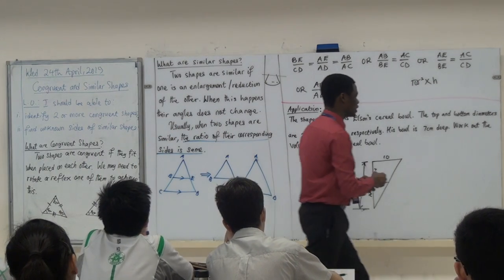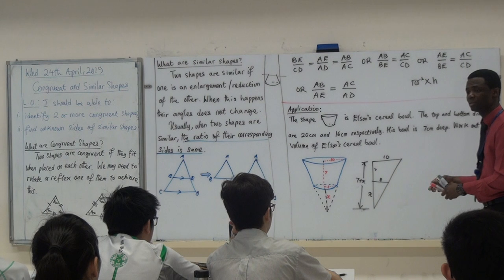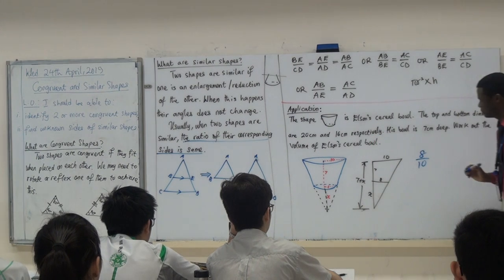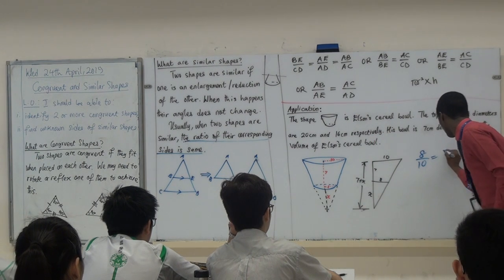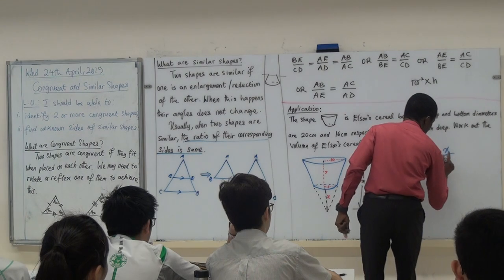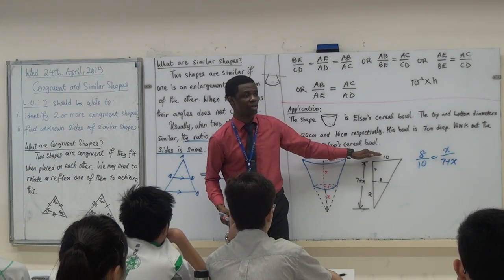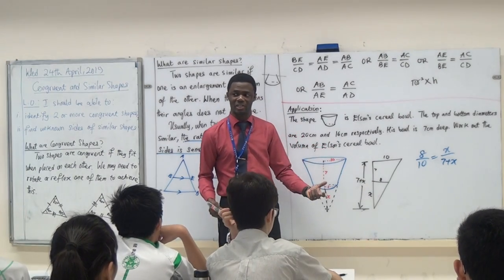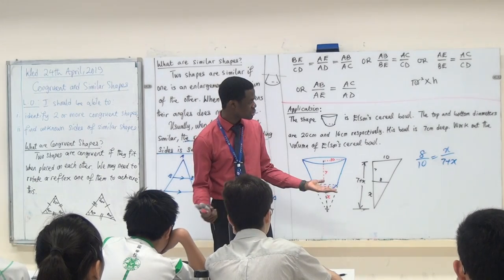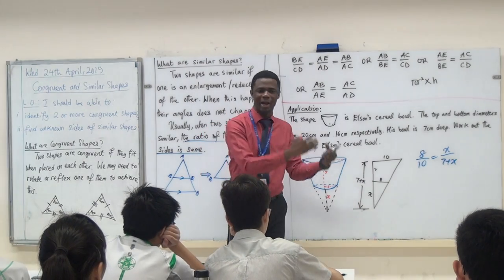So give me the similarity relationship. Once I establish relationship I leave because it's the end of time, 3 minutes to transition. Quickly give me the similarity relationship. 8 over 10, 8 over 10, it was x over... 7, are you sure? 7 plus x, 7 plus x. So 8 over 10, the base of the smaller shape divided by the base of the bigger shape, you are comparing base and height now, height of the smaller shape and height of the bigger shape. Does this look like something you can solve?